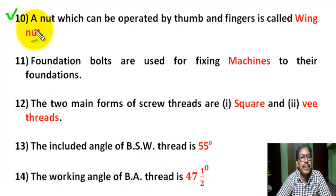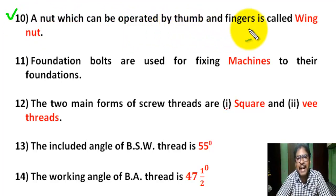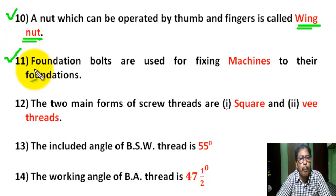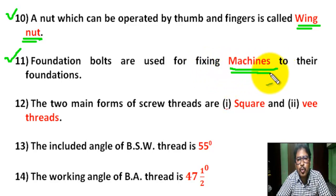Question 10: A nut which can be operated by the thumb and one finger is called a wing nut. Question 11: Foundation bolts are used for fixing machines to their foundations.